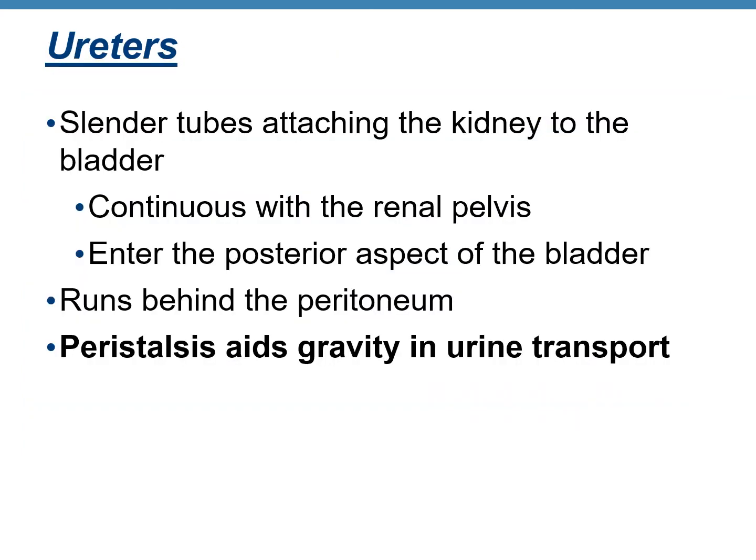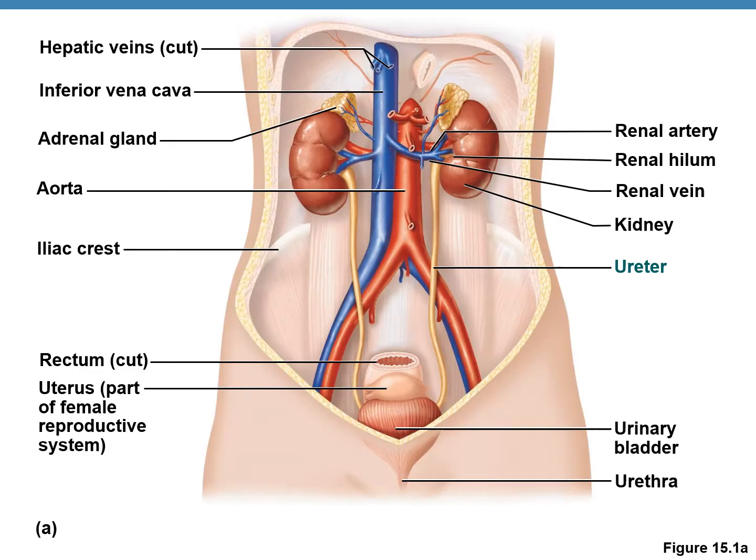Ureters are two long slender tubes that drain urine from the kidney and take it to the urinary bladder. The ureters are continuous with the renal pelvis. They enter the urinary bladder from the posterior side, and it is peristalsis that helps move urine through the ureters. This figure shows the two ureters coming out from the kidneys.